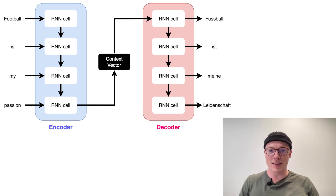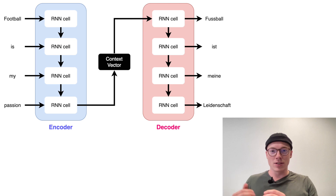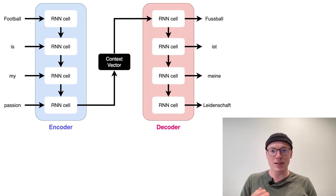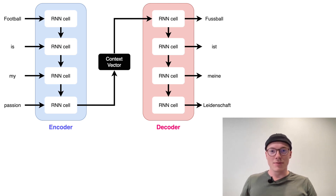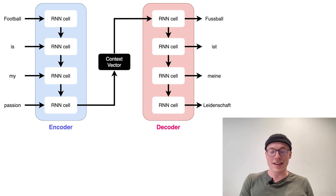First, attention was introduced to the area of machine translation. Let's look back to 2014 to better understand why we needed something like attention. This architecture shows how machine translation models looked back then — a basic encoder-decoder setup. On the left-hand side you see the encoder, which produces a context vector that embeds all the information and represents all the input tokens. It could be a short or long sentence, but we always had to embed it into this fixed-size context vector, which was then passed to the decoder to translate the language.